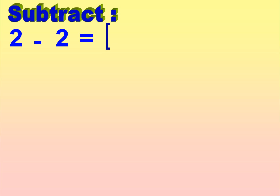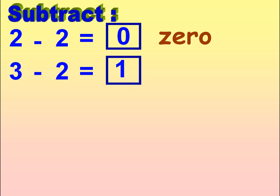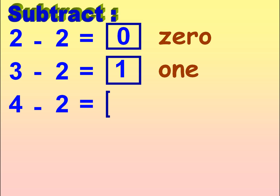2 minus 2 is equal to 0. Z-E-R-O, 0. 3 minus 2 is equal to 1. O-N-E, 1. 4 minus 2 is equal to 2. T-W-O, 2.